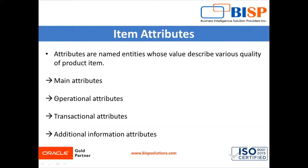The second type is operational attributes. Operational attributes define the behavior of the item with respect to various Oracle Vision applications such as Oracle Fusion Purchasing or Oracle Fusion Inventory. For example, in an inventory application the behavior is in the form of shelf life days; in purchasing, the behavior relates to whether negotiation is required; and in order management, the behavior is whether the item is shippable or not.